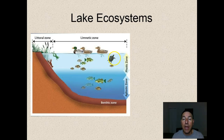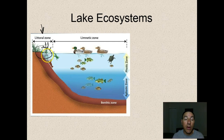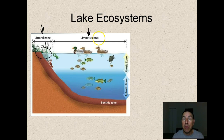Just like streams, lake ecosystems are divided into zones. The first is the littoral zone - where the water meets the land. This is where you see emergent vegetation like cattails, grasses, and lily pads, and where most primary productivity in a lake occurs. Lots of organisms live here including insect larvae and small fish that find shelter in the vegetation. This zone is very important to lake productivity. Moving away from shore, the bottom gets deeper where no sunlight can reach - this is the limnetic zone in the middle of the pond or lake, which can be huge in large lakes like the Great Lakes.